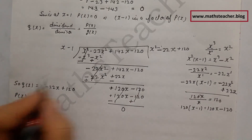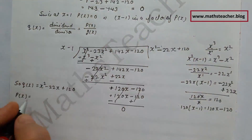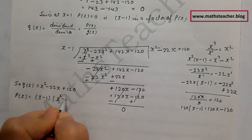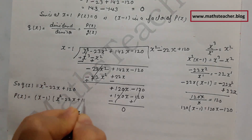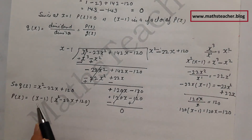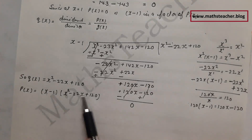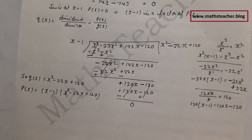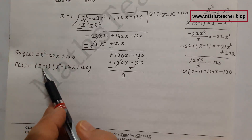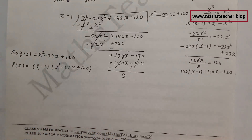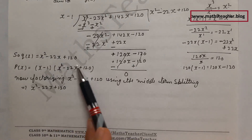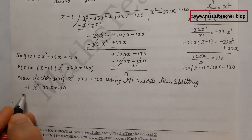So our quotient q(x) equals x square minus 22x plus 120. Therefore p(x) equals x minus 1 times x square minus 22x plus 120. Since this is a cubic equation we need 3 factors total. We have one factor; now we solve the quadratic using the middle term splitting method.